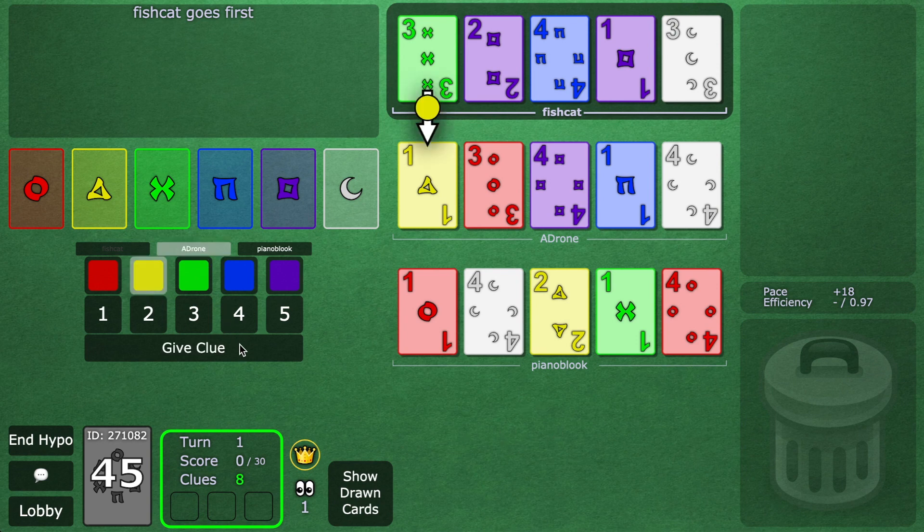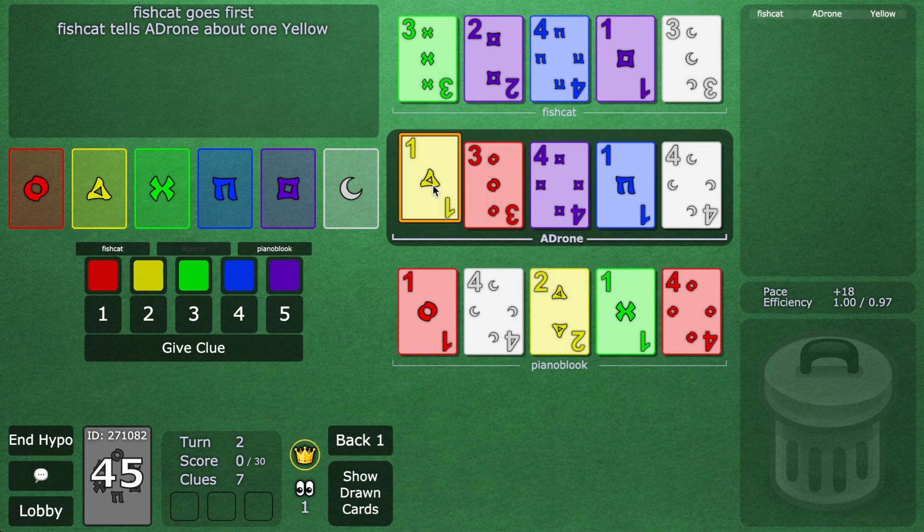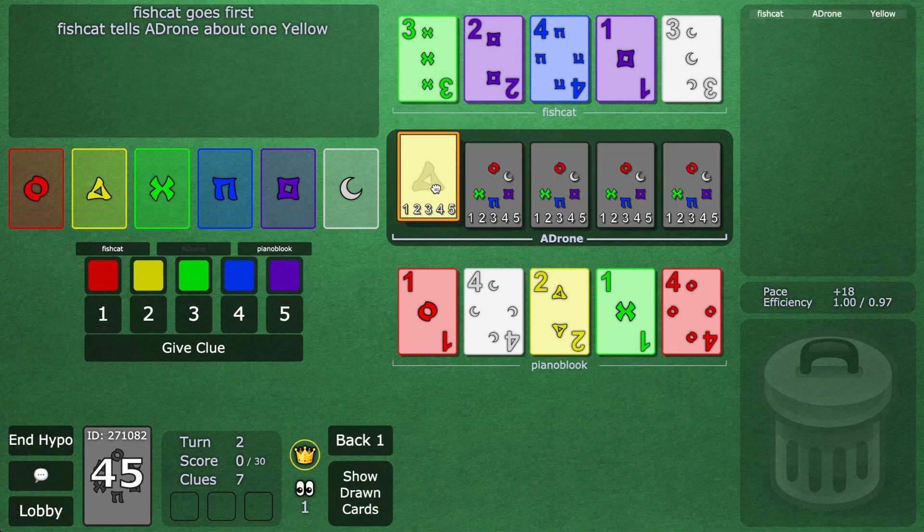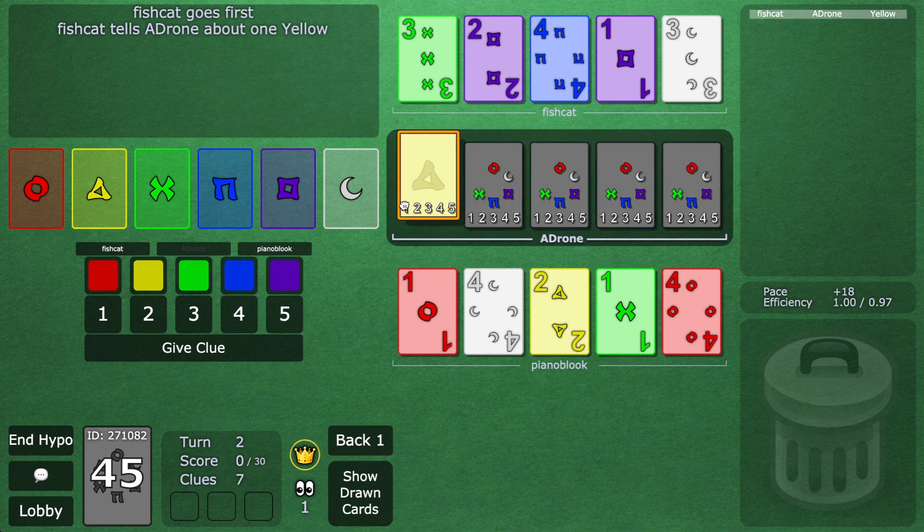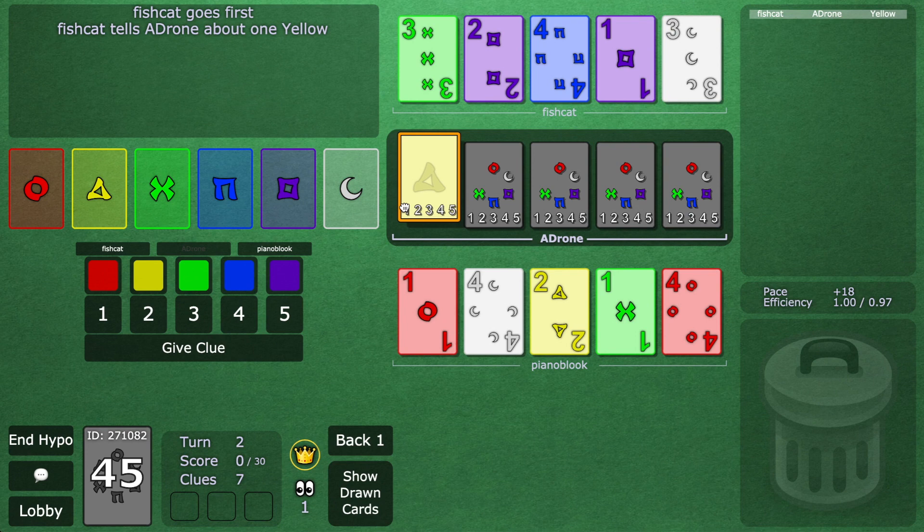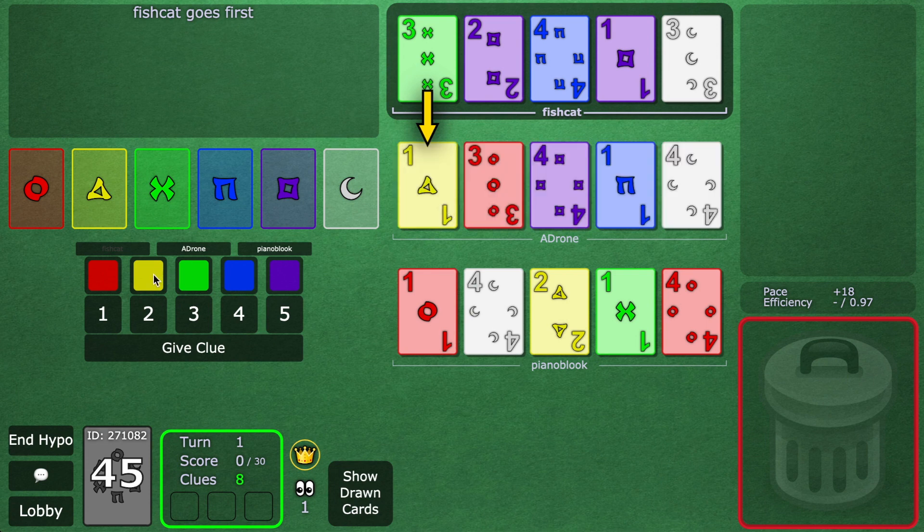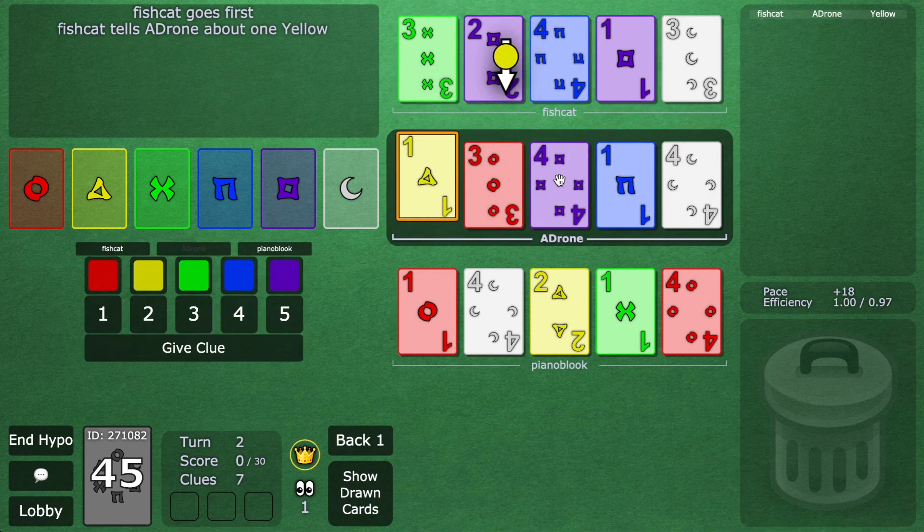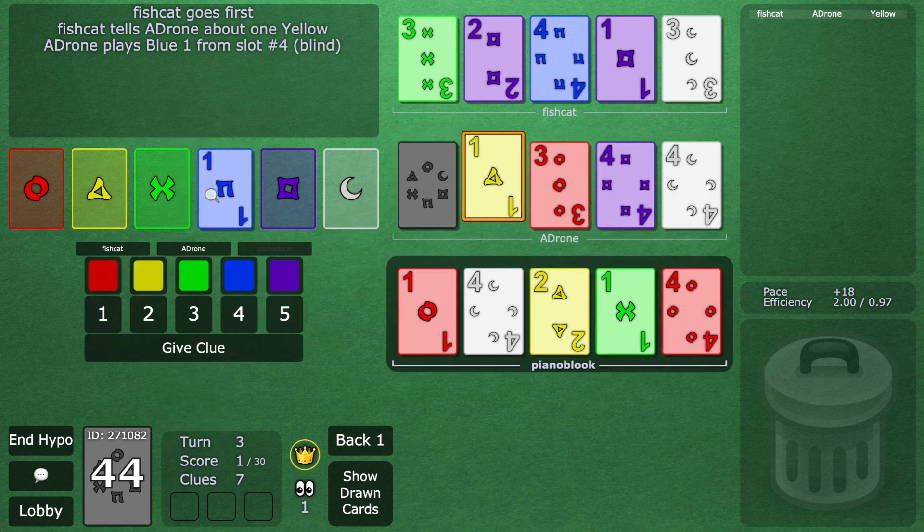Quick review. Fishcat could shadow finesse this yellow two. This is a self-shadow, right? Adron sees they have a yellow card, and they think, well, this is clearly a bad clue, unless he has a way to signal to Pianobluc where Piano's yellow two is. Okay, drumroll please. Here's where stuff gets wonky. Because this is a self-shadow, and when a shadow finesse is given, the player with the shadow is forced to respond. They immediately have to play.